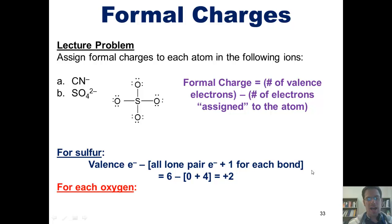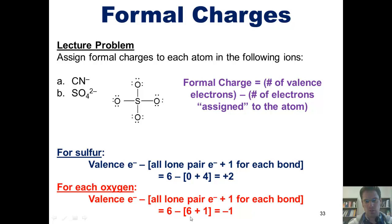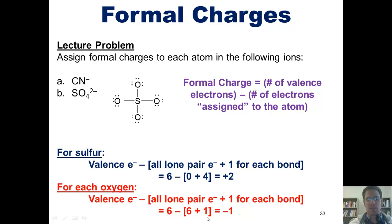For each oxygen atom, the number of valence electrons oxygen has is six. Each oxygen has six total lone pair electrons around it, and each oxygen is also experiencing one bond. Thus, each oxygen's formal charge in this structure is 6 minus (6 + 1), which is negative one.